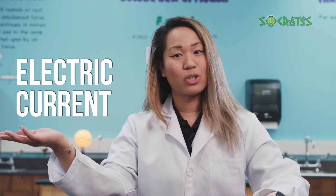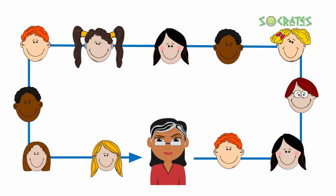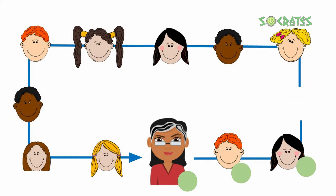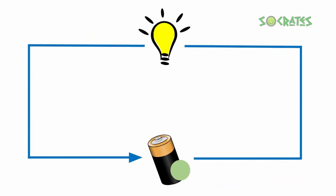Let's look at a demonstration of a circuit. This teacher represents a battery. The students represent the wires in a circuit. The balls represent electrons inside the circuit. Circuits are full of electrons. As long as the circle remains intact and the electrons continue to flow, the circuit is closed.